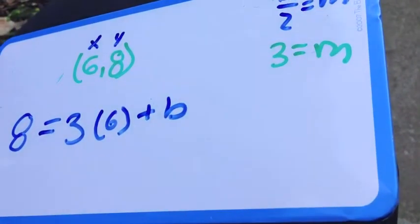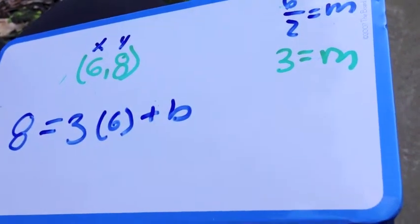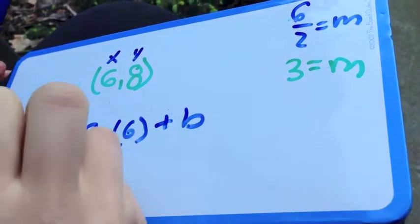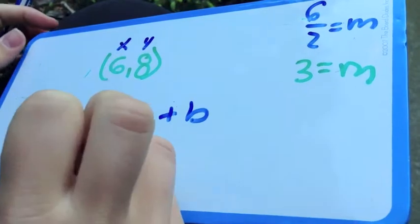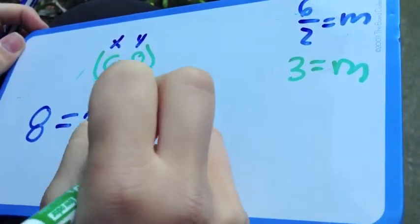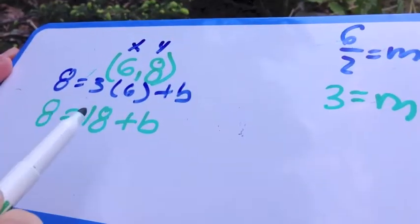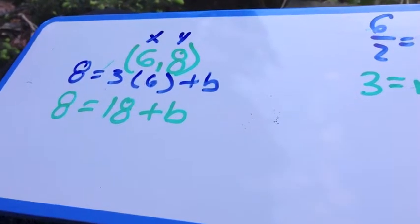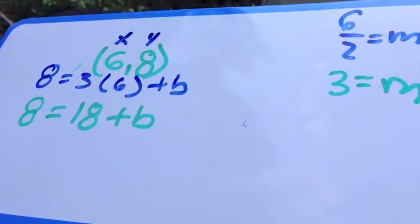Can you guess what we're trying to find in this equation? Maybe the y-intercept, which is b. Perfect! So you have to multiply here, 3 times 6. That's equal to 18 plus b. So 8 equals 18 plus b. Do you remember from the first video what we're supposed to do now? Maybe subtract 18 from both sides. Exactly!